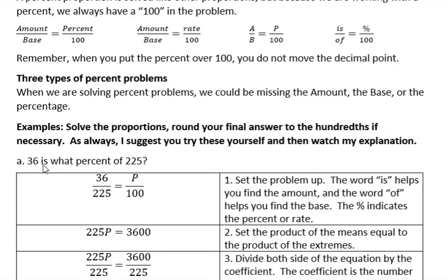Since they said 36 is, 36 is my amount. That goes on top. 225, that goes on the bottom. I want to tell you that the greater number does not always go on the bottom; sometimes it's on the top. That's why you really have to read carefully and make sure you set this up correctly.